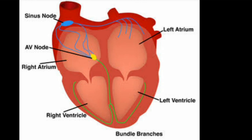In a high-grade first degree block — that is, the marked first degree AV block — patients may develop symptoms similar to pacemaker syndrome, such as dyspnea, malaise, lightheadedness, chest pain, or even syncope, due to poor synchronization of atrial and ventricular contractions.